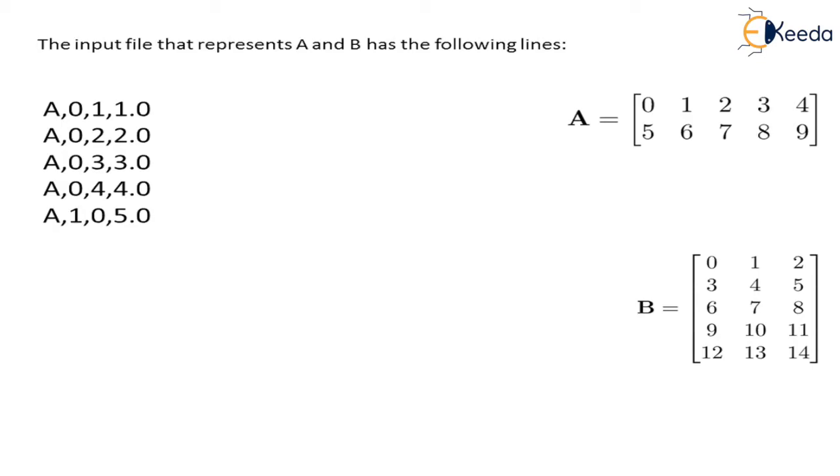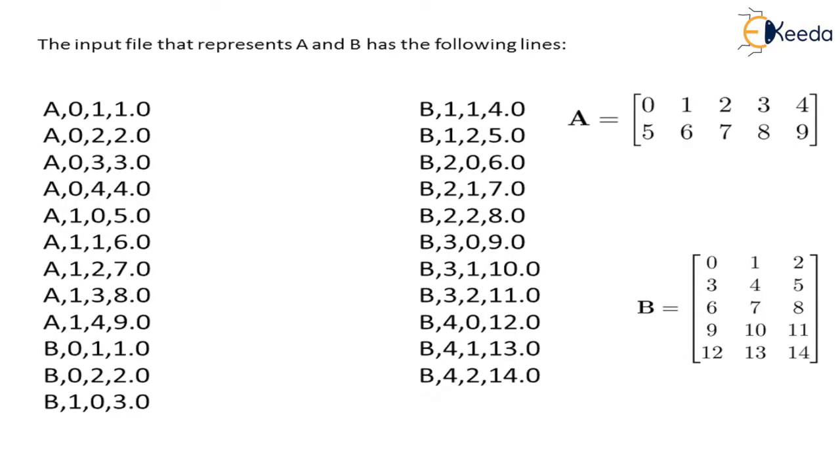Same for element 5. The position is 1,0, name of the matrix is A, so it will be A,1,0,5.0. We can represent 6 as A,1,1,6.0, and so on. We can calculate the whole matrix A representation in the input file and we can also calculate matrix B in the input file format. That is the first step to perform.